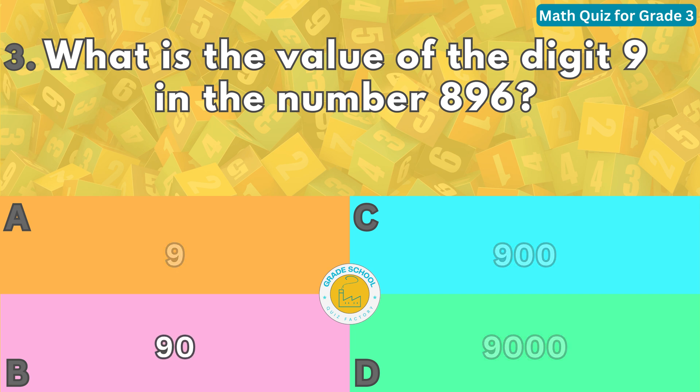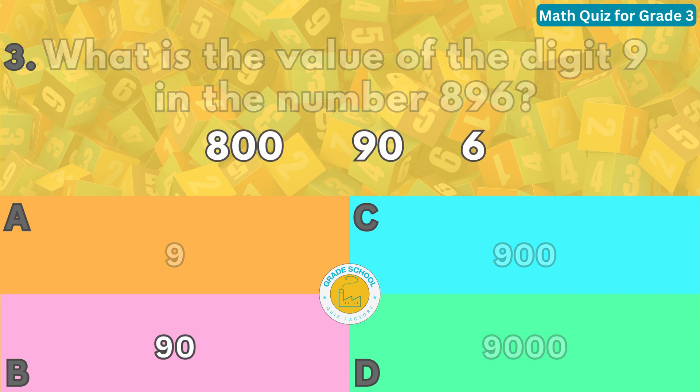Each digit in a number has a specific value based on its place. In the number 896, the digit nine is in the tens place. So we know it represents nine tens or 90.